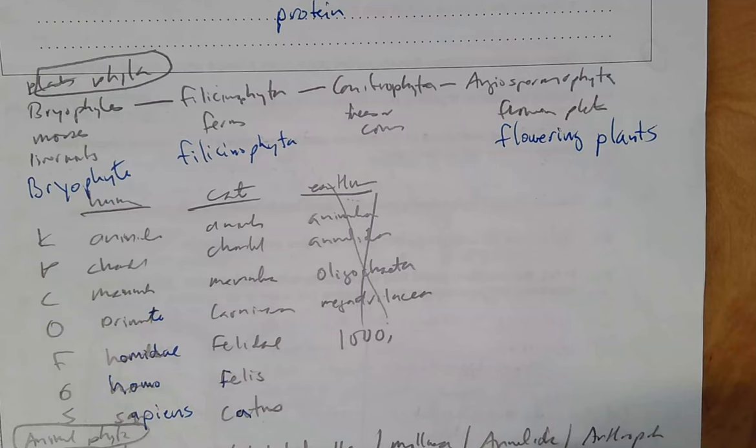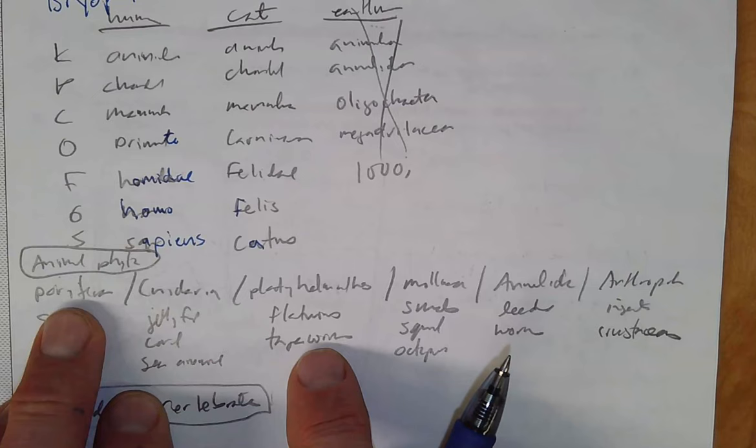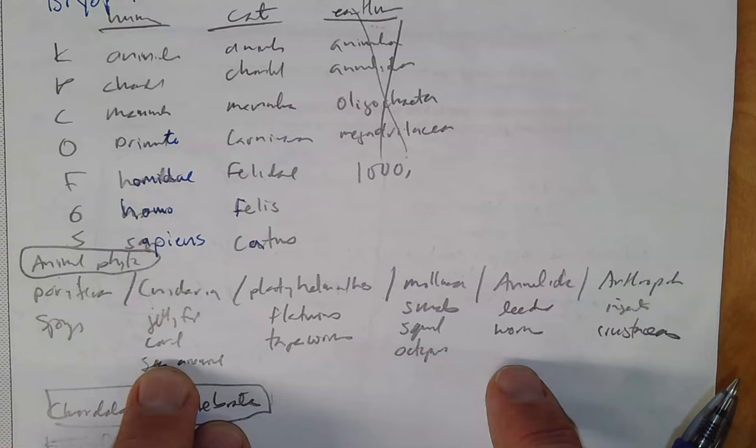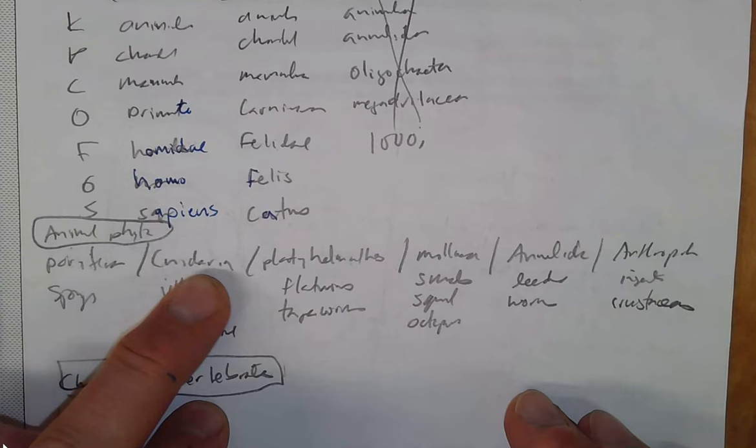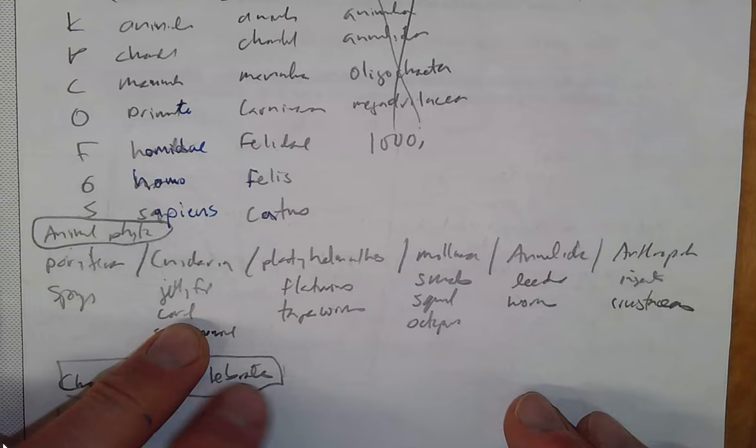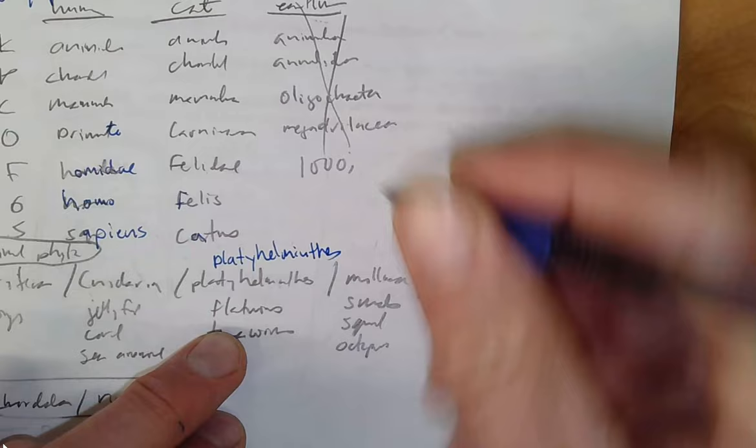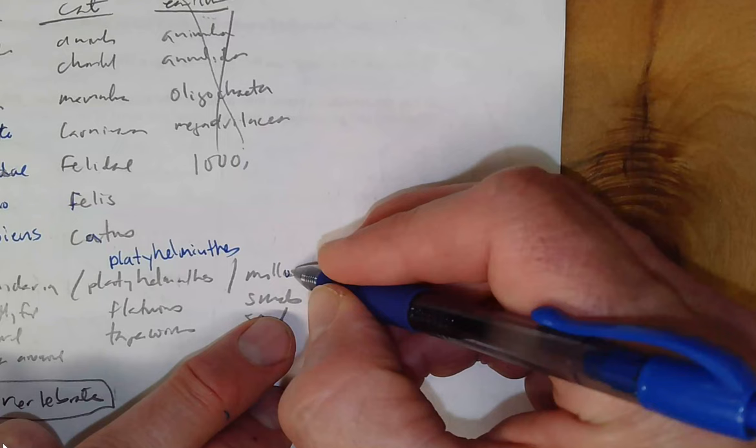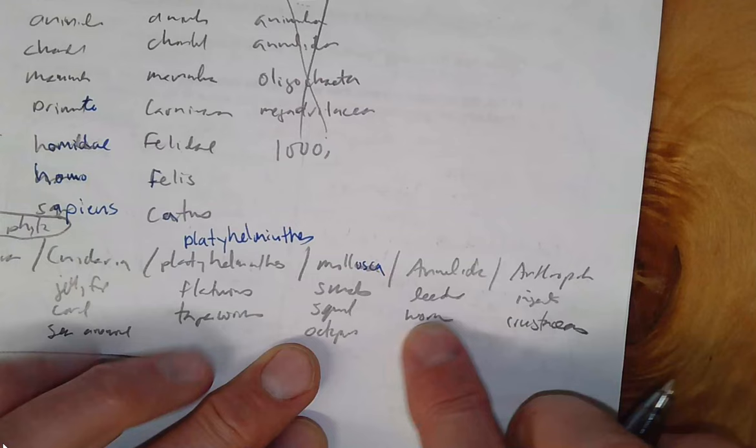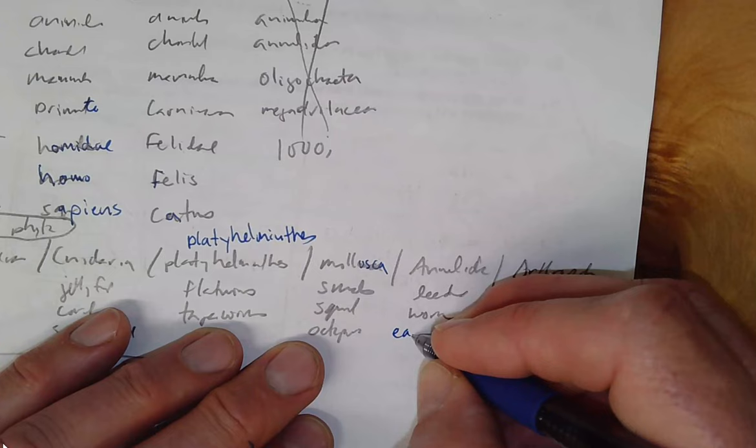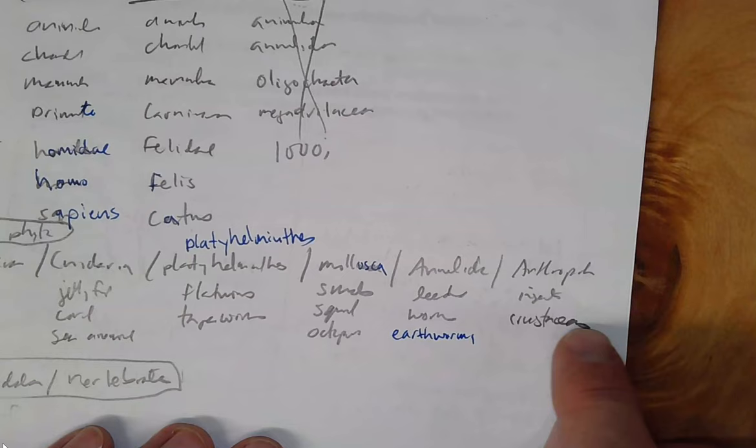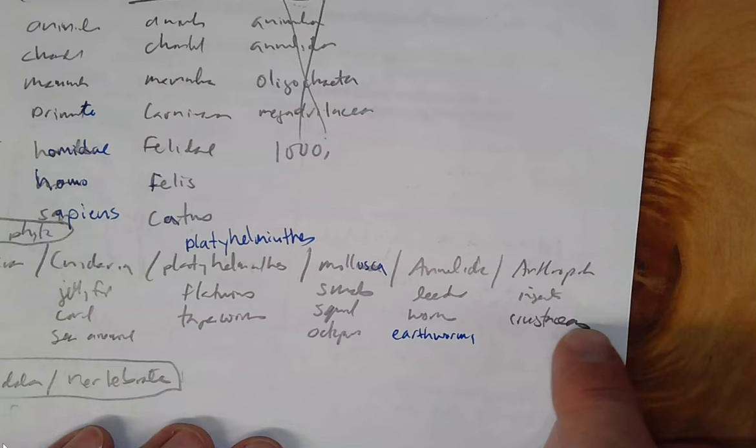And here are the animal phyla that you need to be aware of. Poriferans—the sponges, or Porifera. Cnidaria—jellyfish, cnidaria, jellyfish, sea anemones, coral. Platyhelminthes—flatworms, tapeworms. Mollusca—sponges, squid, octopus. Annelida—leeches, earthworms. And Arthropoda—insects, crustaceans like crabs and lobsters. All right, so that finishes section A.